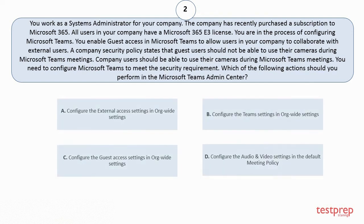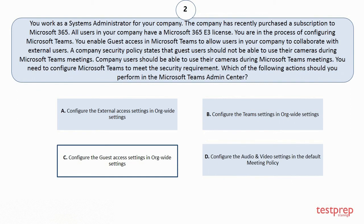A company security policy states that guest users should not be able to use their cameras during Microsoft Teams meetings. Company users should be able to use their cameras during Microsoft Teams meetings. You need to configure Microsoft Teams to meet the security requirement. Which of the following actions should you perform in the Microsoft Teams Admin Center? Your options are: A. Configure the External Access Settings in Org-Wide Settings. B. Configure the Teams Settings in Org-Wide Settings. C. Configure the Guest Access Settings in Org-Wide Settings. D. Configure the Audio and Video Settings in the Default Meeting Policy. The correct answer is Option C.